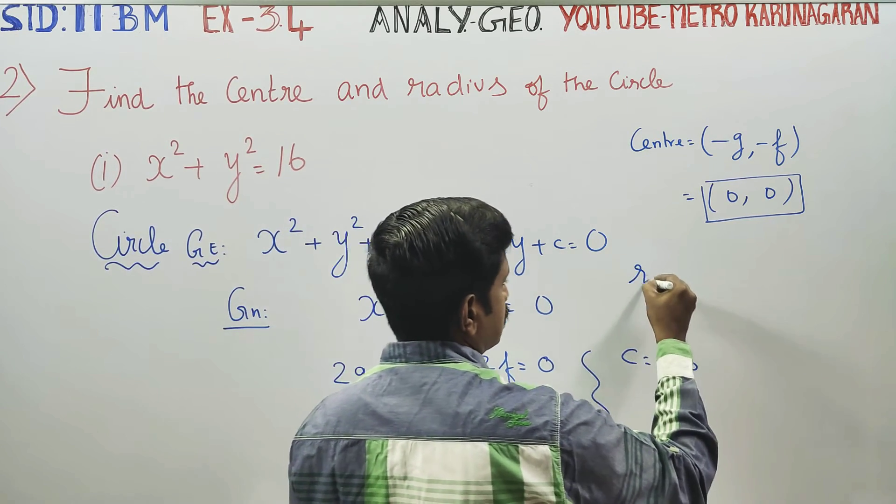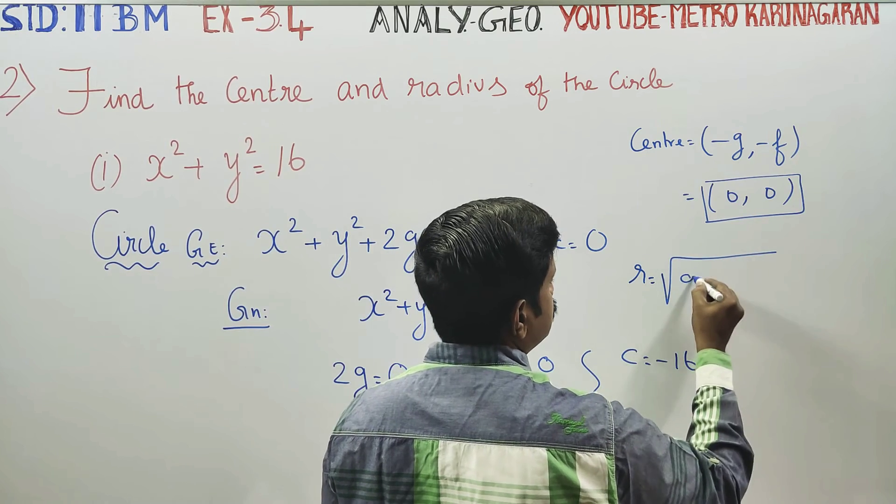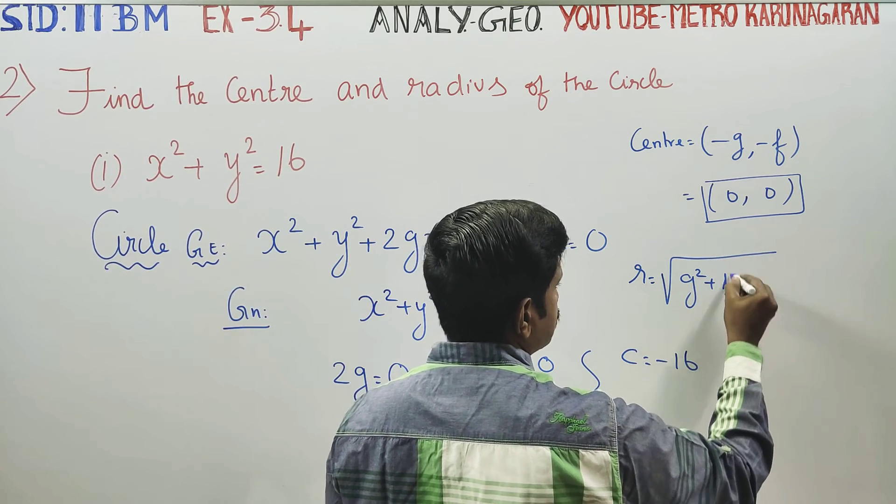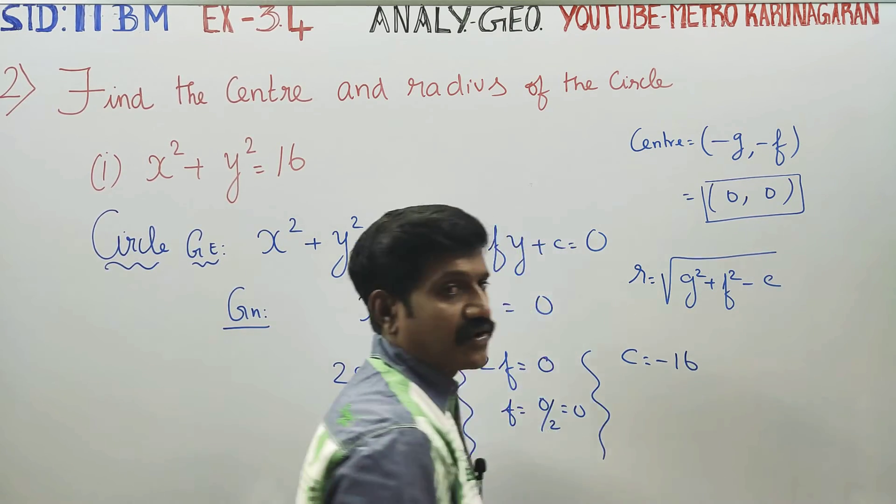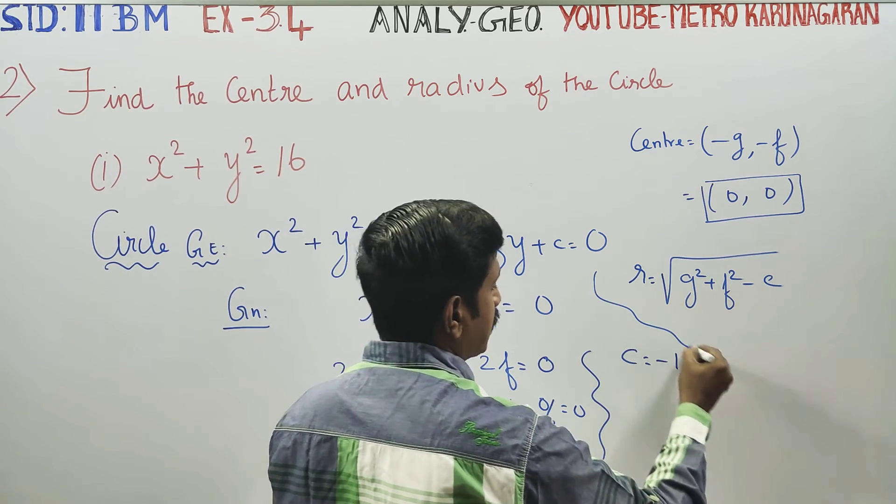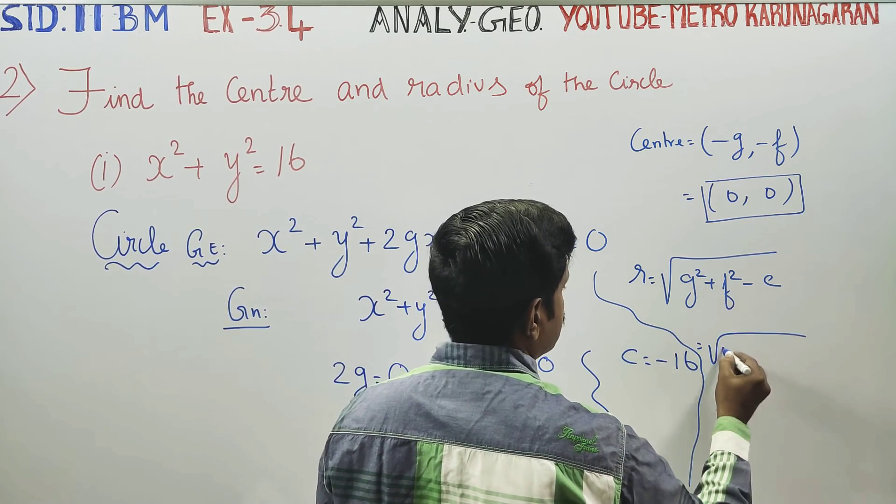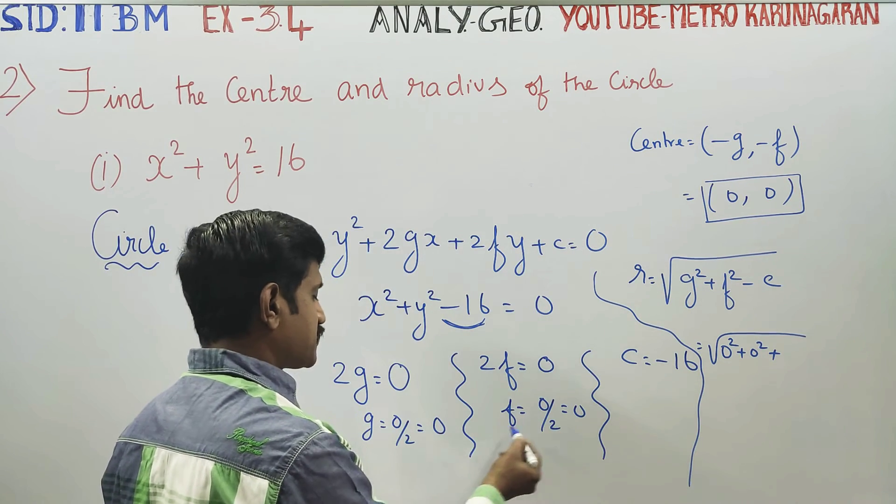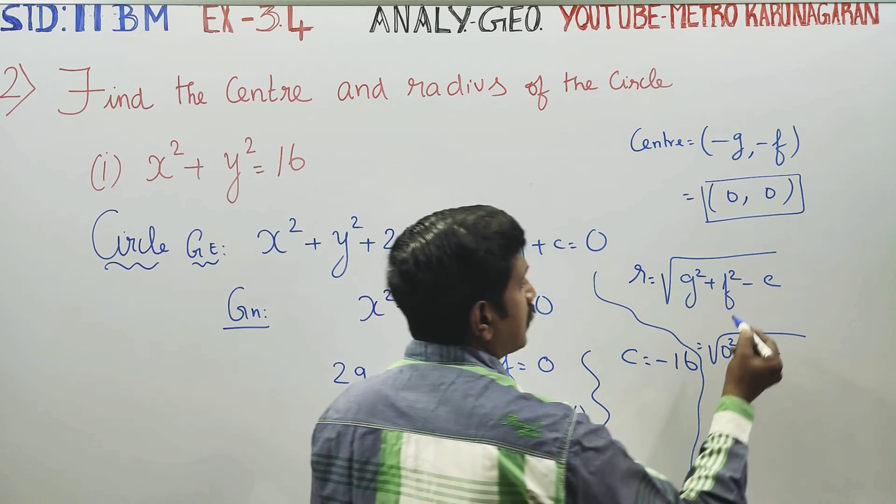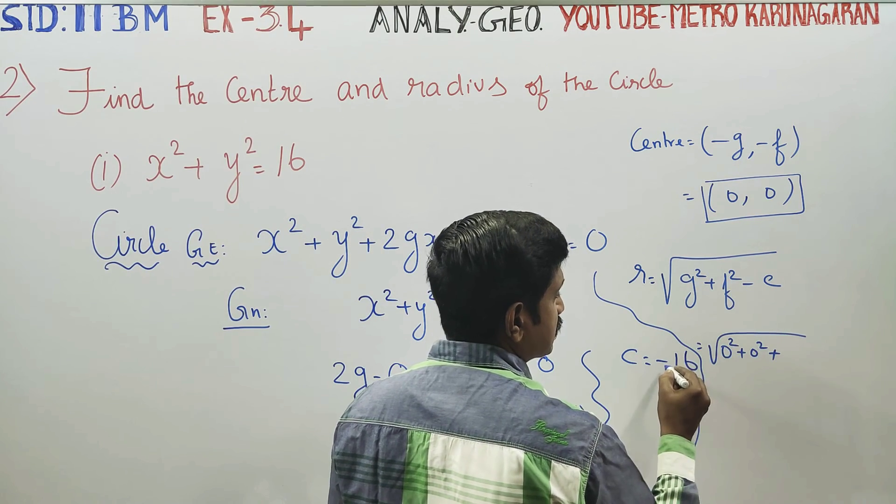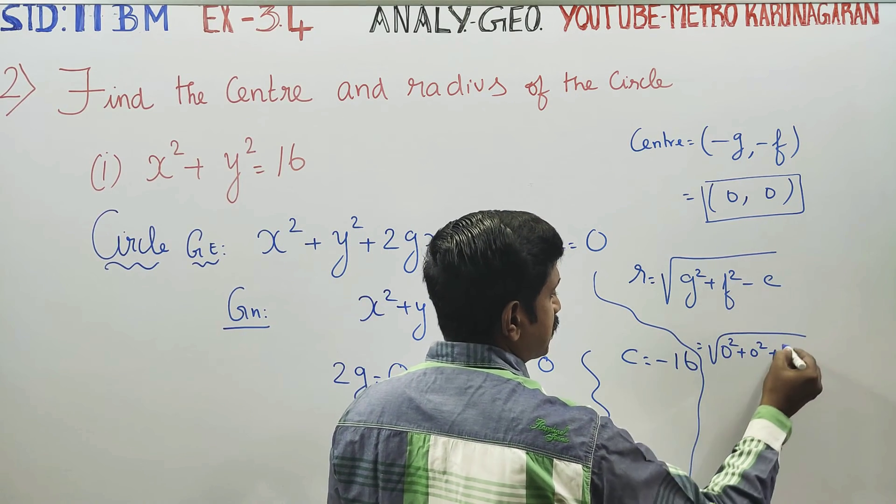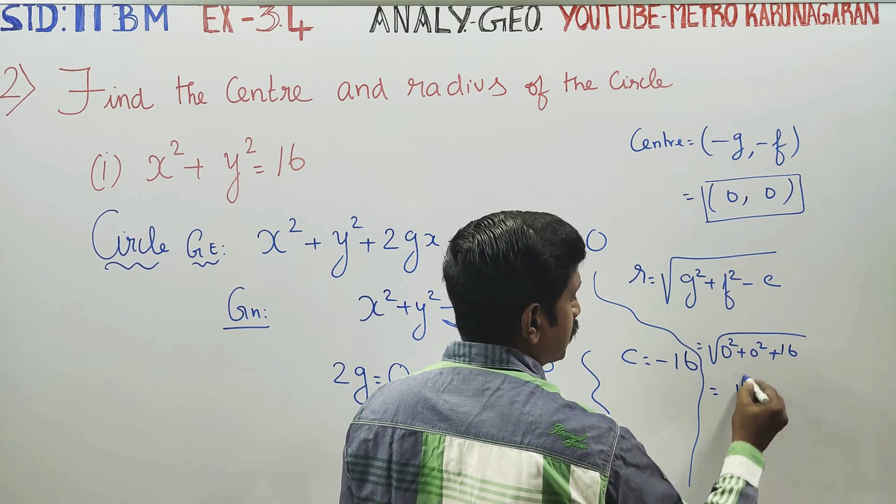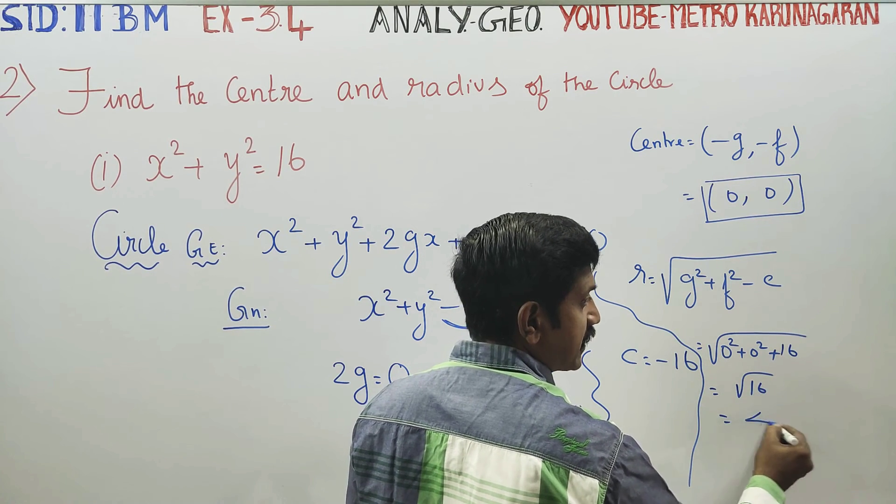Now, radius. Radius is equal to the formula. Minus minus plus, square root of 16. Root 16 is the value. That answer is 4.